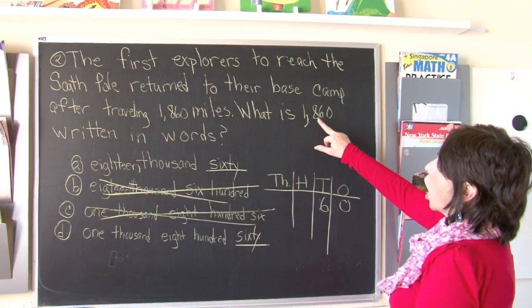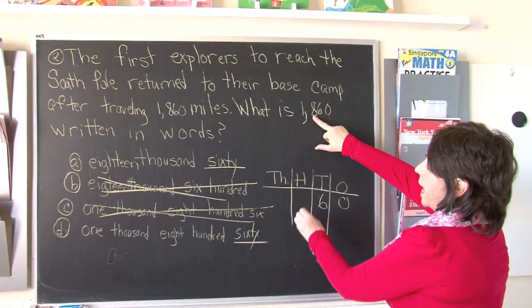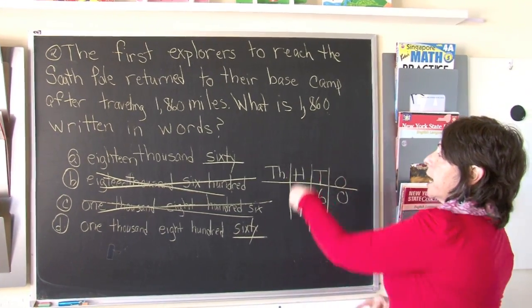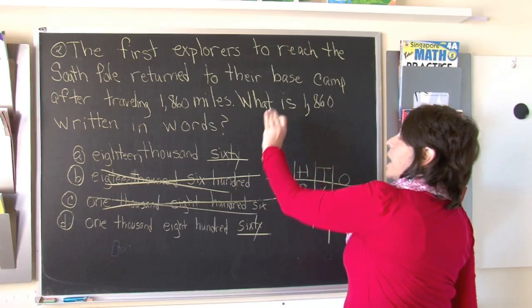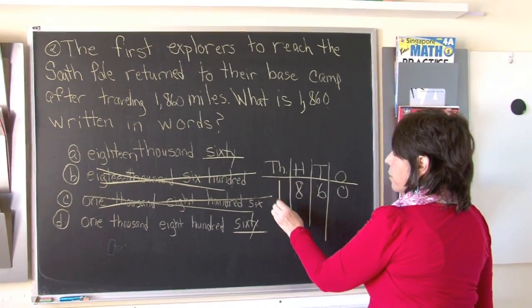Let's look now at the hundreds column. There are 8 hundreds. Now we had a comma, so we're going to the thousands. There was 1 thousand.